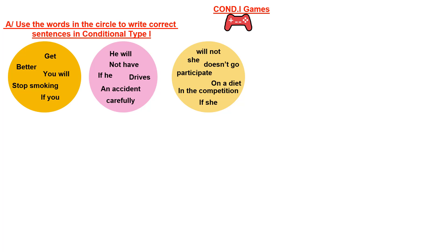For the first game, you have three circles, and in each circle you have words in a mixed order. What you do is put them in the correct order and give the correct sentence in conditional type 1. You can start with the if clause or with the main clause — both are correct. For each sentence, do not spend more than one minute. After finishing game number one, you can move to game number two.